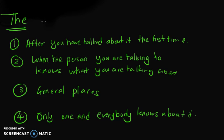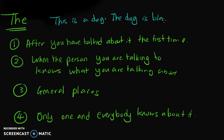First, we should use the word 'the' after we have talked about it the first time. For example: 'This is a dog. The dog is black.' We have mentioned the dog the first time, so we use the word 'the' in the sentence following the first sentence.